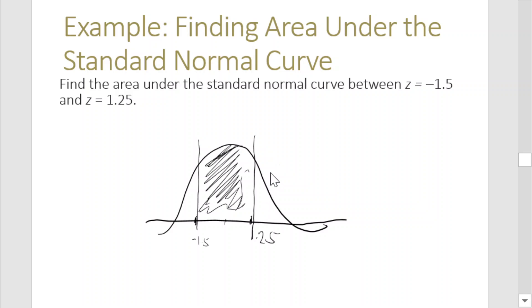To get this area, you need to get the area of this minus this. Let's say this is z2 and this is z1. To get the area, we have to subtract: the area at z2 minus the area at z1. So let's get the areas of each z value.